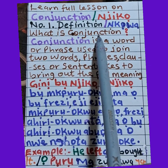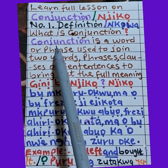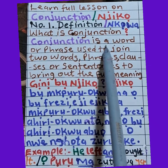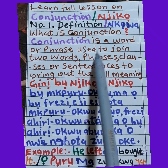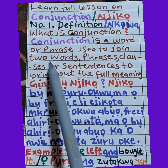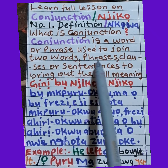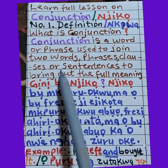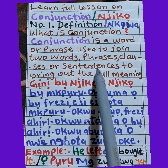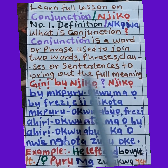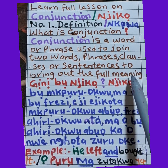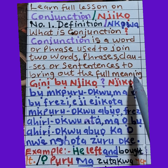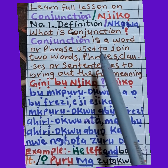What is conjunction? Conjunction is a word or phrase used to join two words, phrases, clauses or sentences to bring out the full meaning. You have seen the full meaning of conjunction in English.